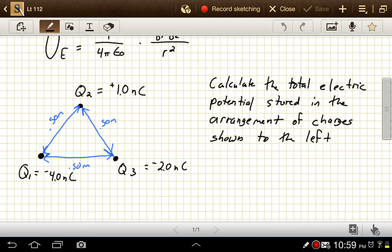So in this setup we've got three objects that amounts to three different pairs: the pair of one and two, the pair of two and three, and the pair of one and three. So we just need to add together the three electric potential energies associated with each pair.